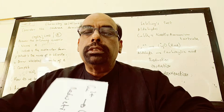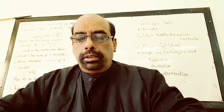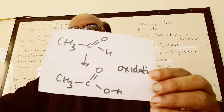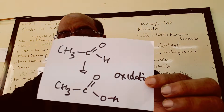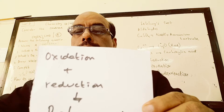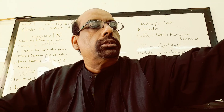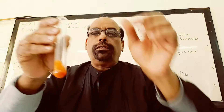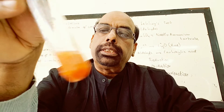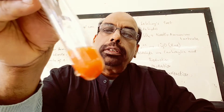In this reaction, copper(II) is reduced to copper(I). The aldehyde, ethanal, is oxidized to ethanoic acid. We have both oxidation and reduction — a redox reaction. After boiling for some time, the precipitate is brown, reddish-brown.